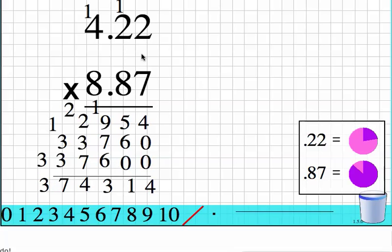Well now I have to place the decimal. I see 1, 2, 3, 4 total numbers after the decimal point. So my answer has to match that. 1, 2, 3, 4. So my answer is 37.4314.